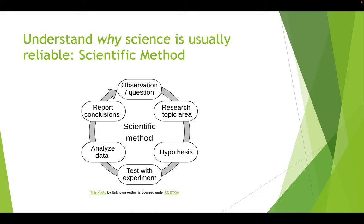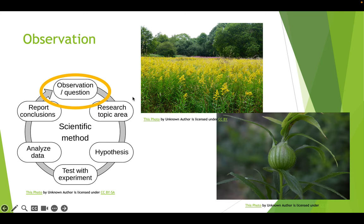Understanding why science is usually reliable: the scientific method. I know you guys have seen this in different forms, probably since middle school. Generally, we start with an observation. So a scientist might observe a golden meadow full of goldenrod plants.